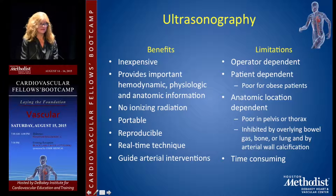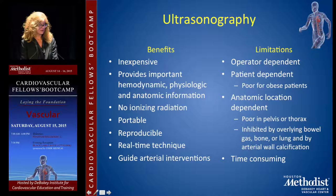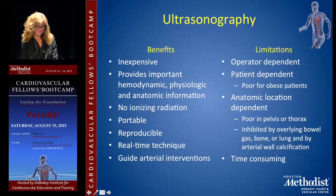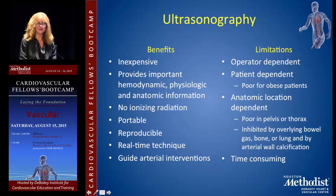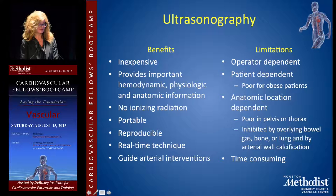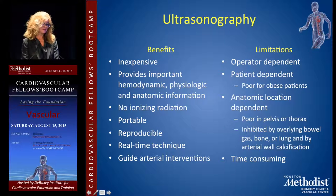Duplex ultrasound is essentially a cheap version of an angiogram — it defines anatomic location of stenosis or occlusion, provides a road map of disease in the lower extremity, guides further imaging, and is used for surveillance after interventions and to guide arterial interventions. Advantages include being inexpensive, portable, and reproducible. The limitation is that it is operator-dependent. In our institution, we have no qualms operating based on ultrasound alone, but only with an accredited vascular lab. It doesn't work well for thoracic disease or morbid obesity.